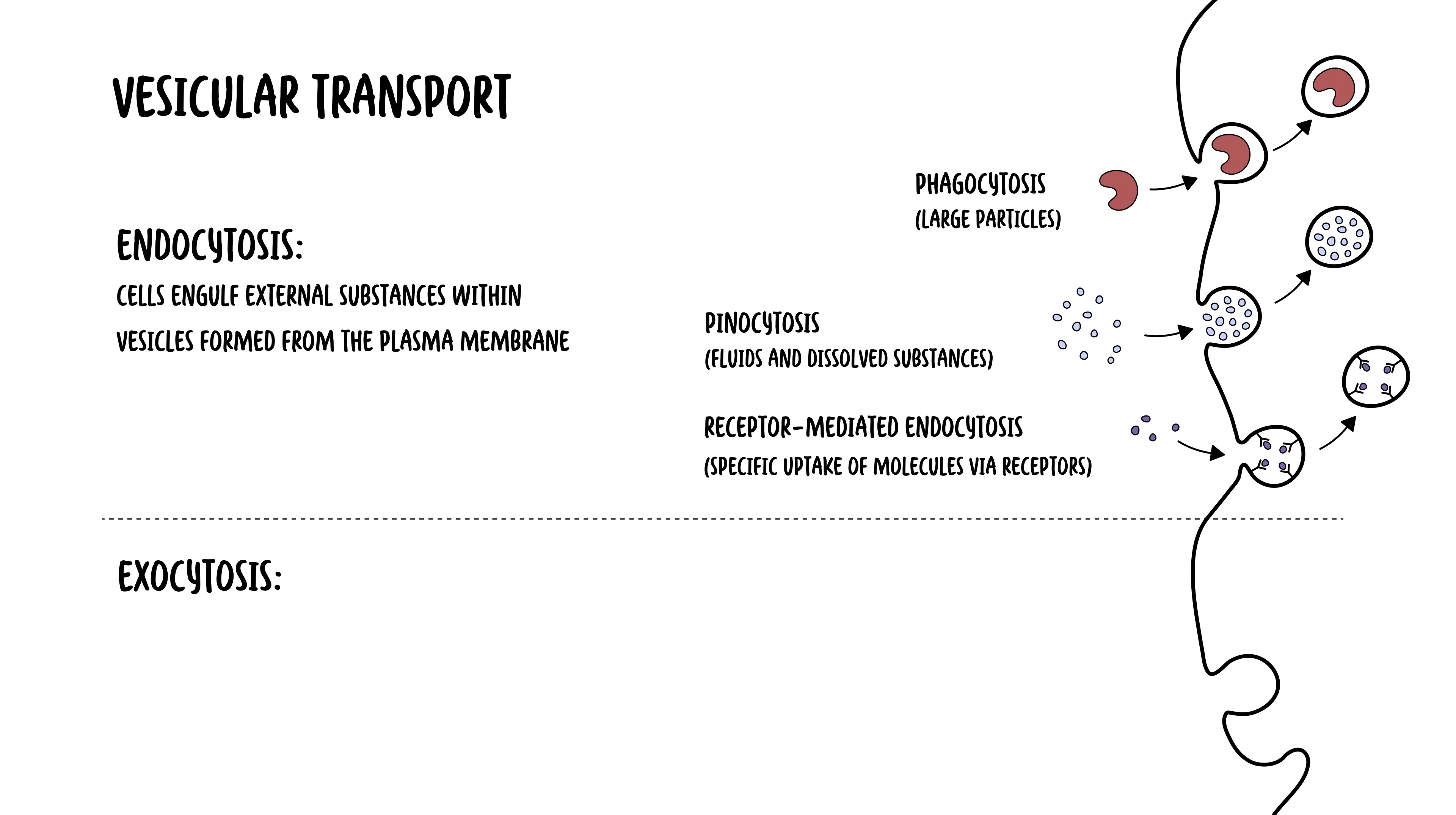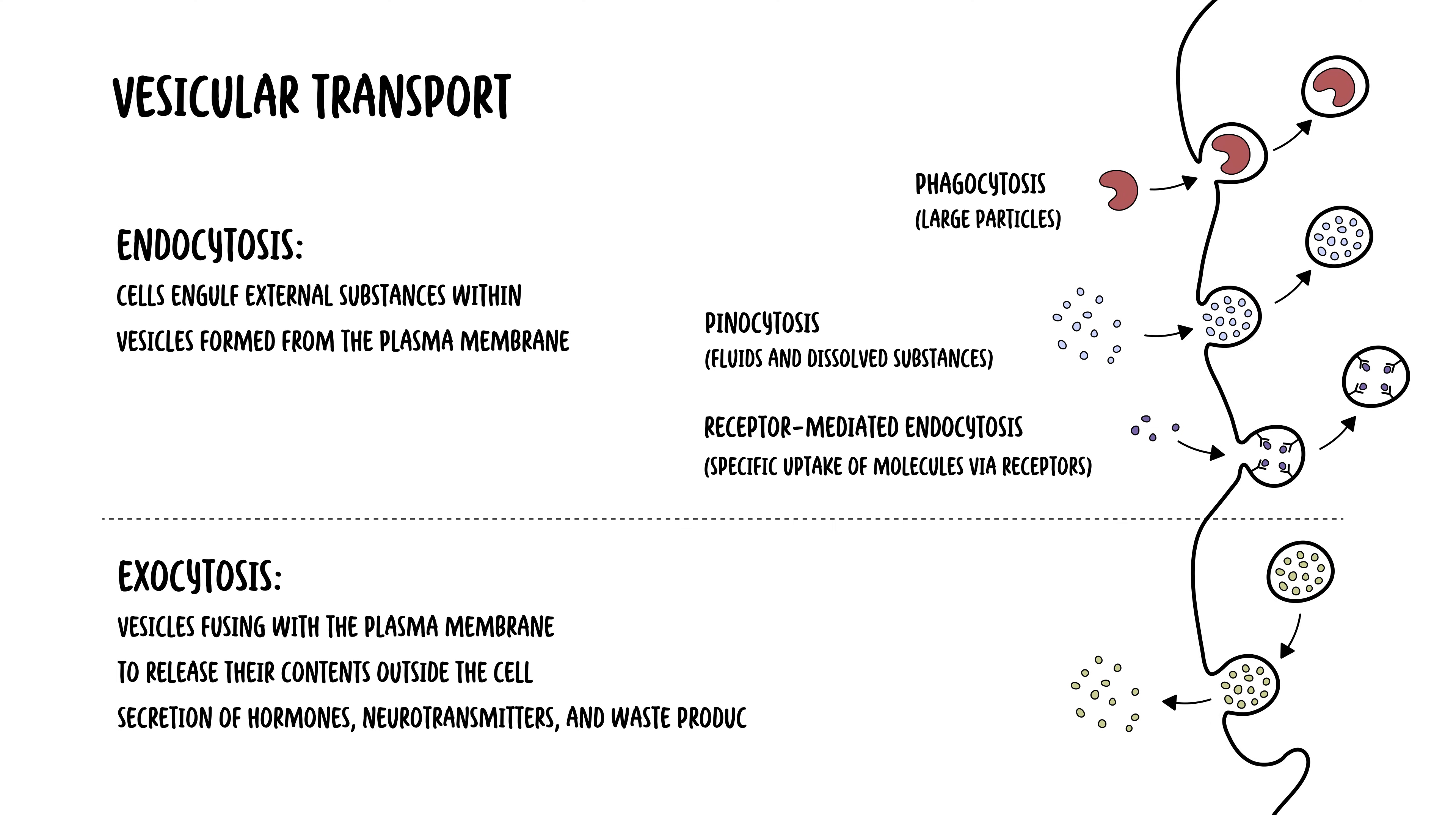Exocytosis, on the other hand, is a process of vesicles fusing with the plasma membrane to release their contents outside the cell, used for secretion of hormones, for example, neurotransmitters and waste products.